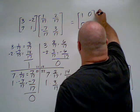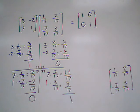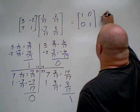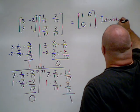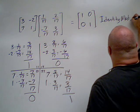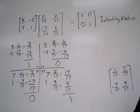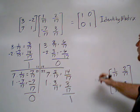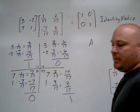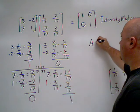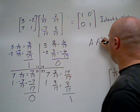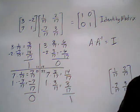Our product, then, is this. This is the identity matrix. What this tells us is that when we multiply a matrix A times its inverse, we get the identity matrix.